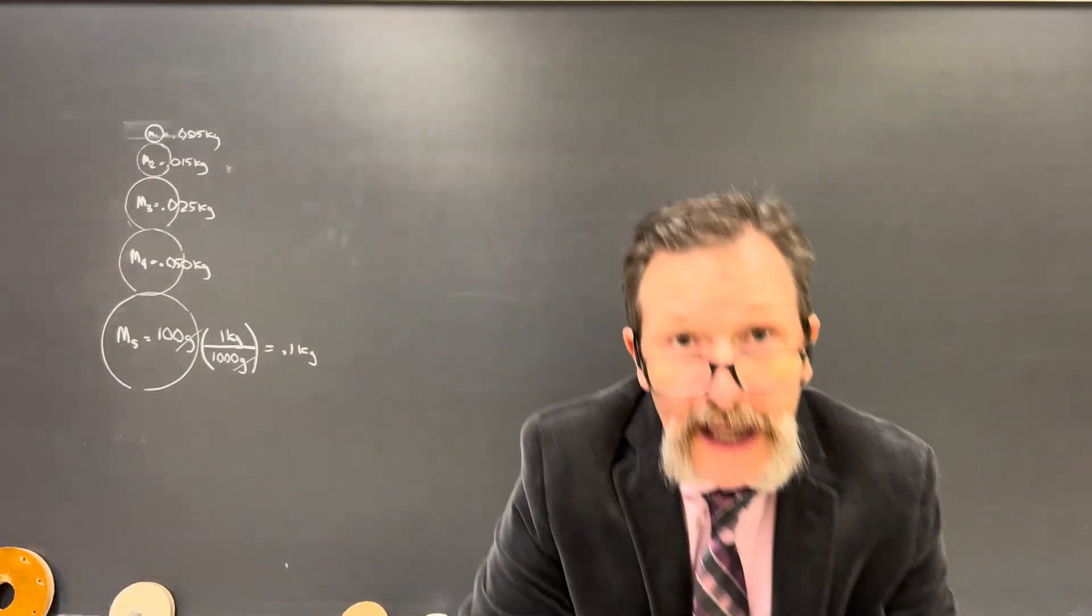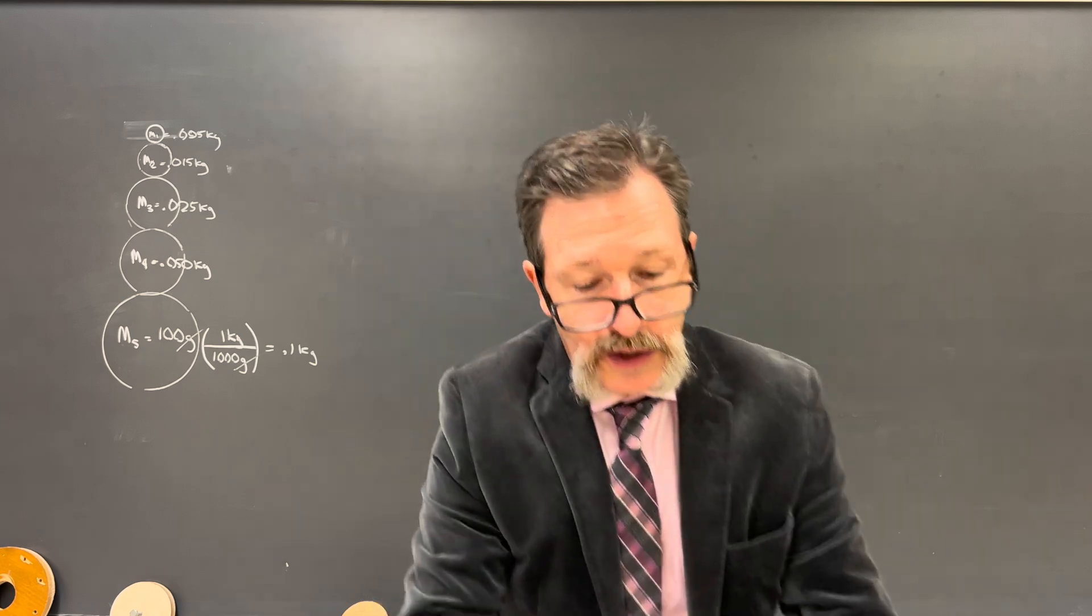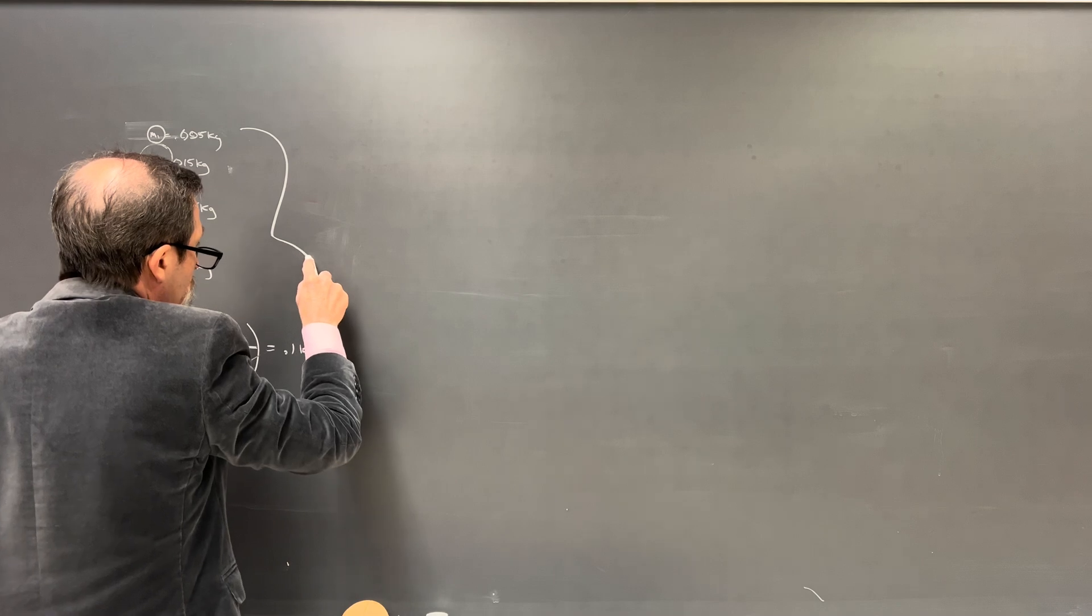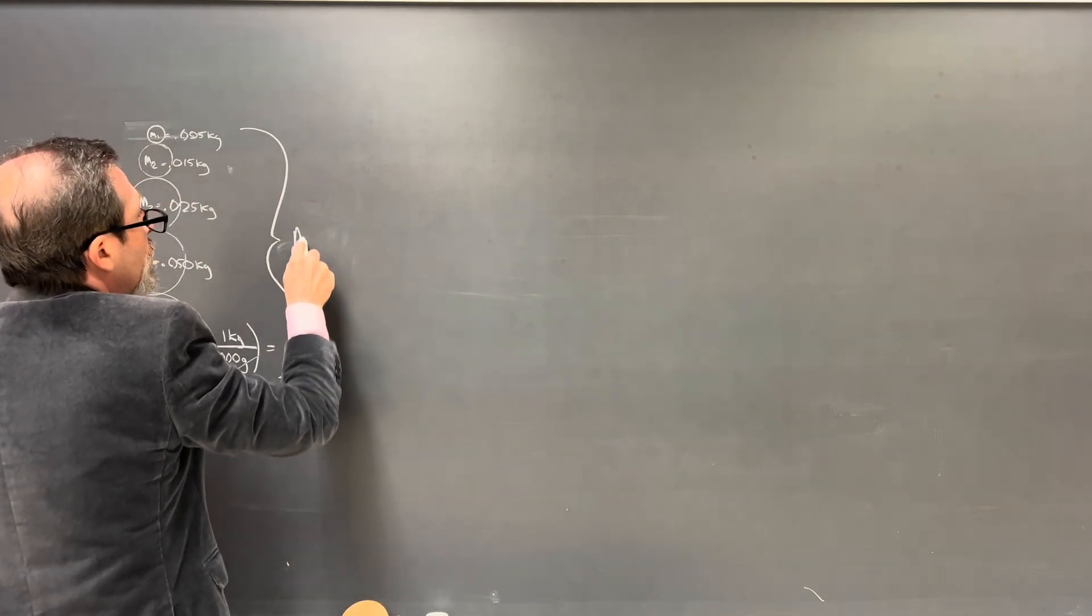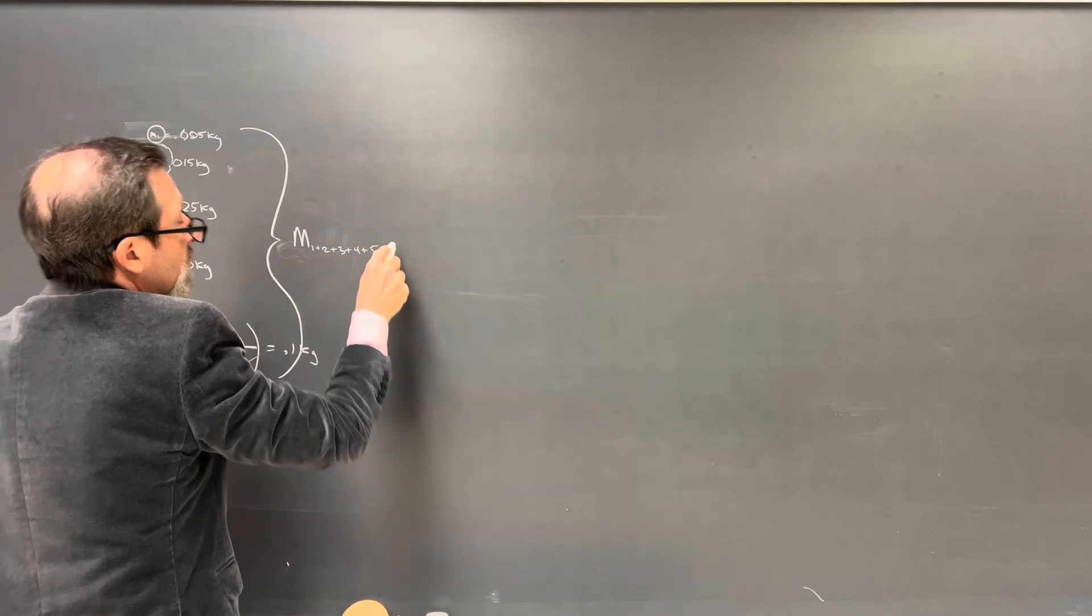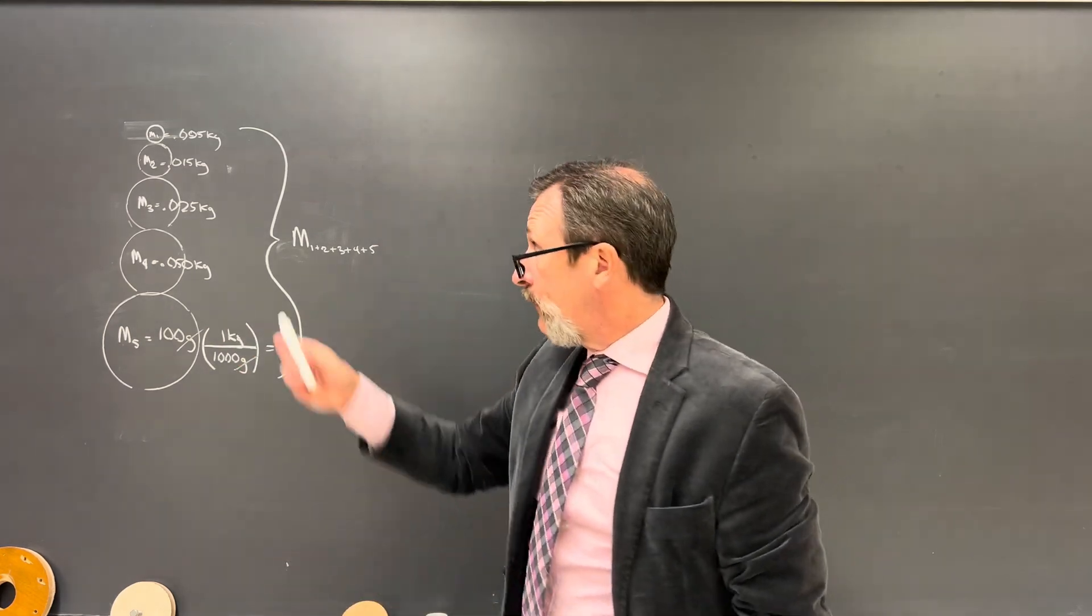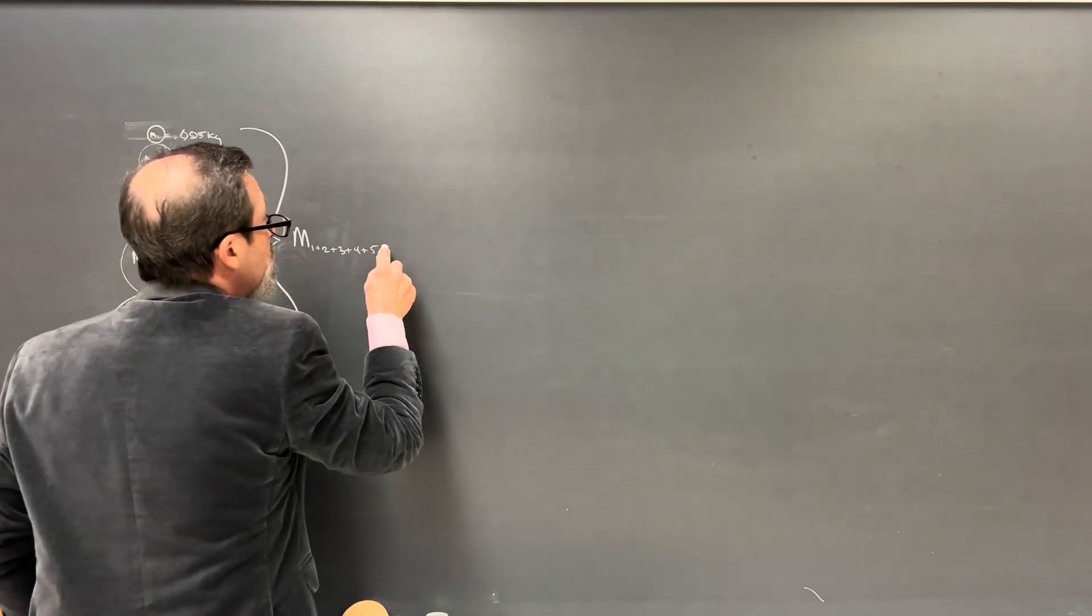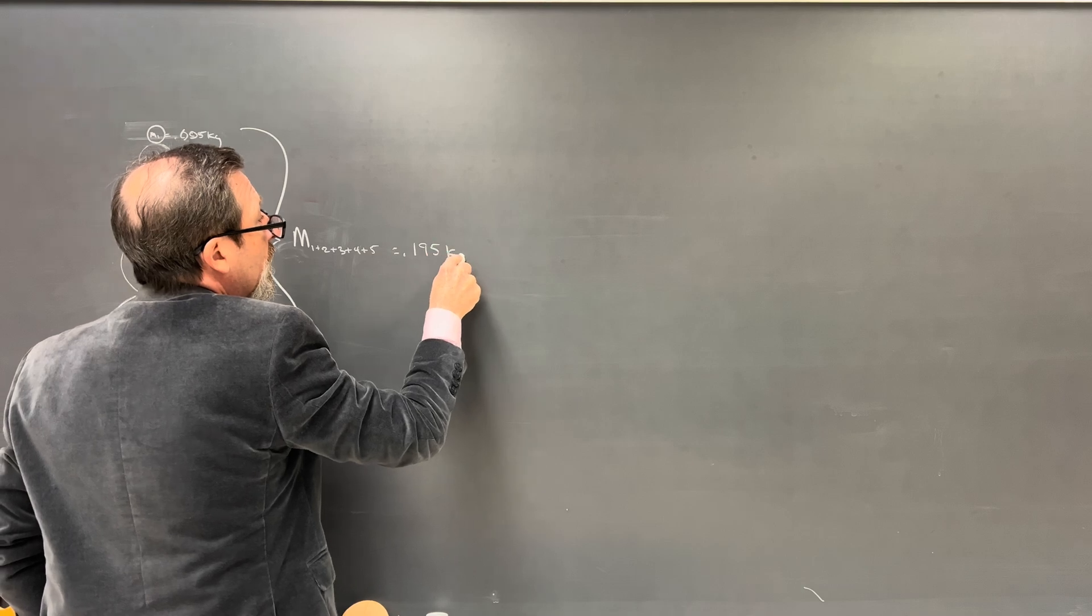Now when these are dropping together, and I'll draw another picture in a moment here, we can think of these as all being one object. So I'll put them together. Just kind of put all of these together right here. And I could call them mass one plus two plus three plus four plus five. And I can add those up. 100 grams plus 50 is 150, 175, 190, 195. So all of this together equals 0.195 kilograms.